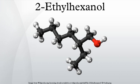Nomenclature: isooctanol and 2-ethylhexanol are not synonyms. According to the Chemical Abstract Service, isooctanol refers to an isomer of octanol, 6-methylheptan-1-ol.